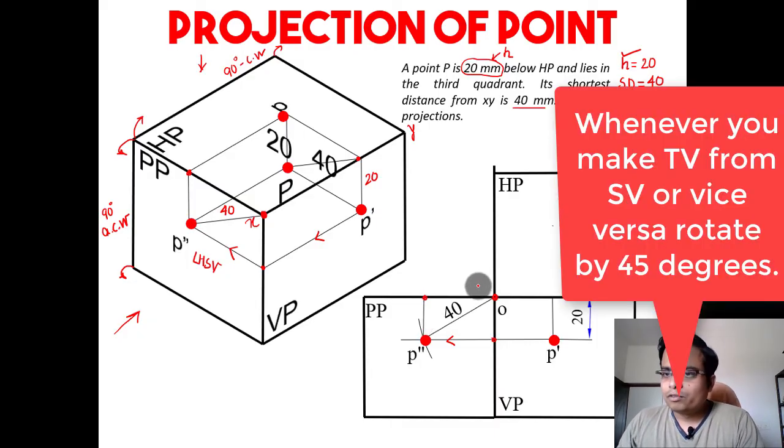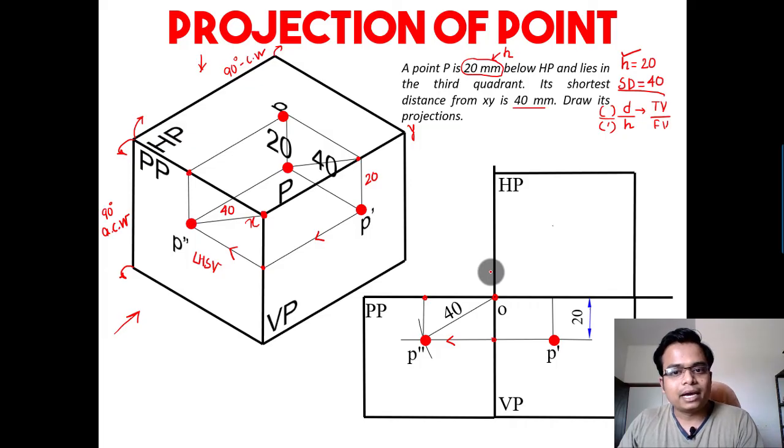Rotate by an angle of 45 degrees. Here we need to rotate this line by an angle of 45 degrees this way. That's it. This is 45 degrees. And once you've reached here, then you can make a horizontal line from here and produce this vertical line from here, and both of them are going to intersect somewhere here.